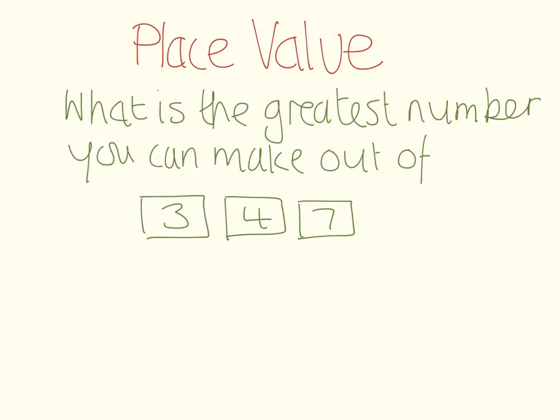This question says, what is the greatest number you can make out of 3, 4, 7? These here are digit cards. That's the digits that you are going to use in order to make the greatest number. It doesn't mean add them. It just means that you have these three numbers available, these three digits that you are then going to make into a number. If you have three digits, you can therefore make a three-digit number.